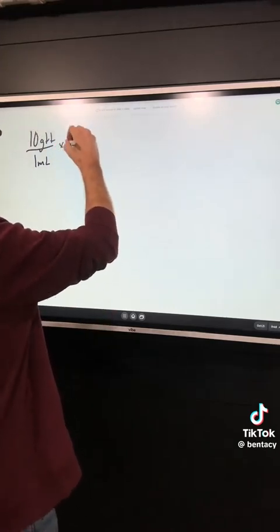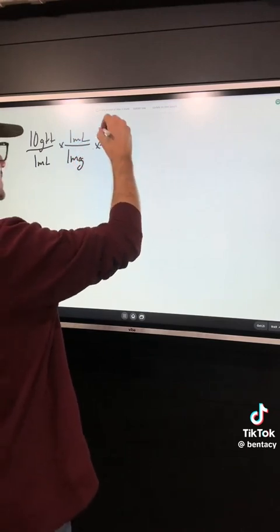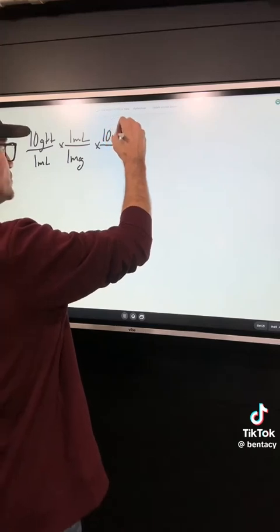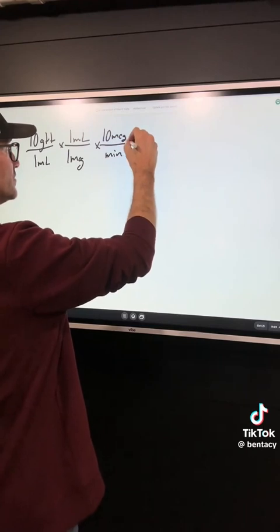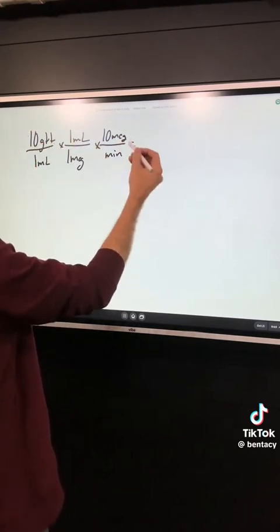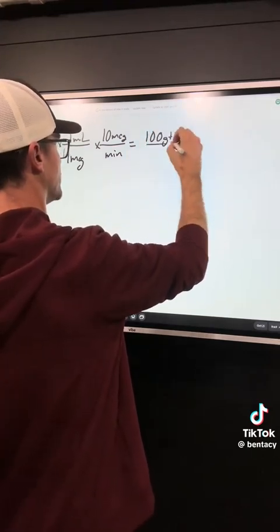And in that one milliliter is one microgram, and then our dosing is two to ten micrograms per minute for that drip. So we go out and do our math here, easy peasy, 100 drops per minute.